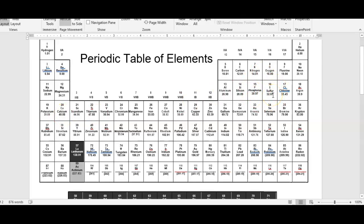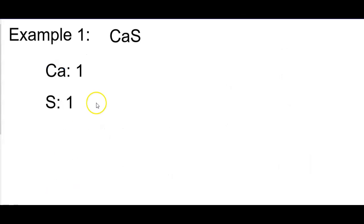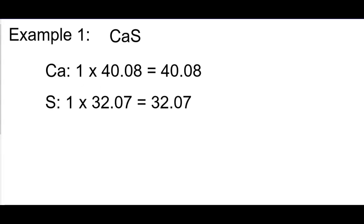So you'll use what we call the average atomic mass. That's how we learned it originally. Now I refer to it as the periodic table number, but properly it's called the molar mass. So we have one calcium and one sulfur. We're going to look up the periodic table number, a.k.a. molar mass, and multiply how many we have of each atom times its number off the periodic table.